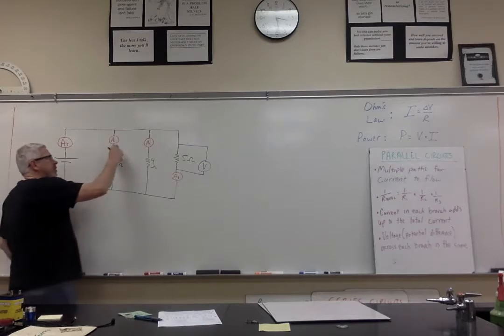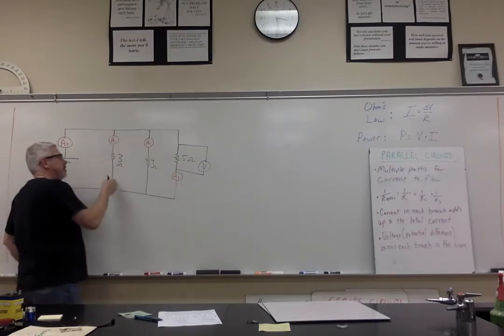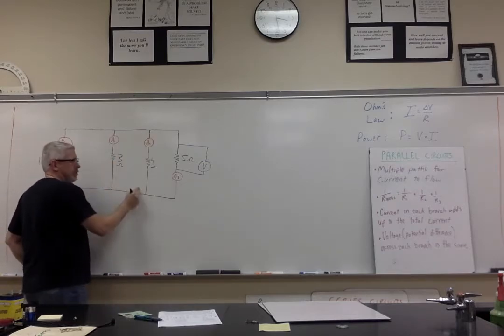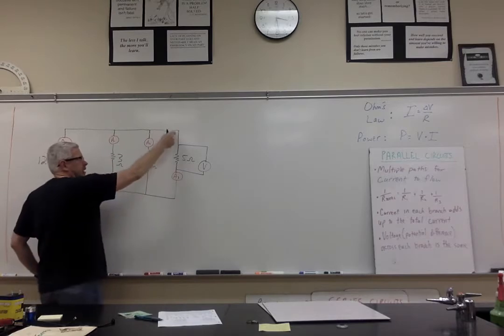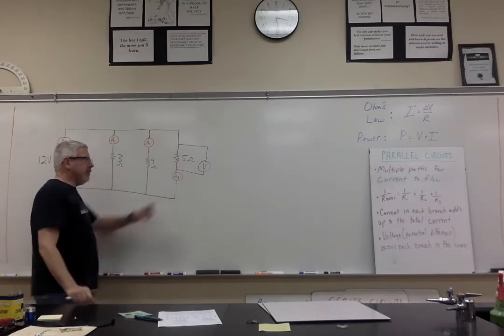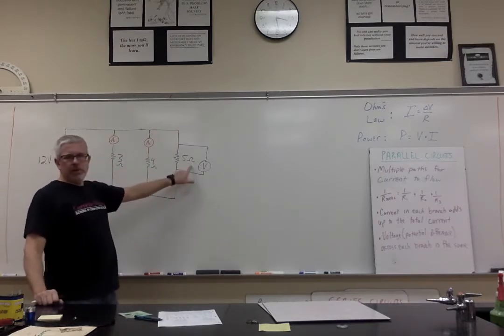I've got an ammeter designed to measure the current through this branch, an ammeter to measure the current through this branch, and an ammeter to measure the current through this branch. I've only got one voltmeter in the circuit, and the reason for that is going to be listed down here.